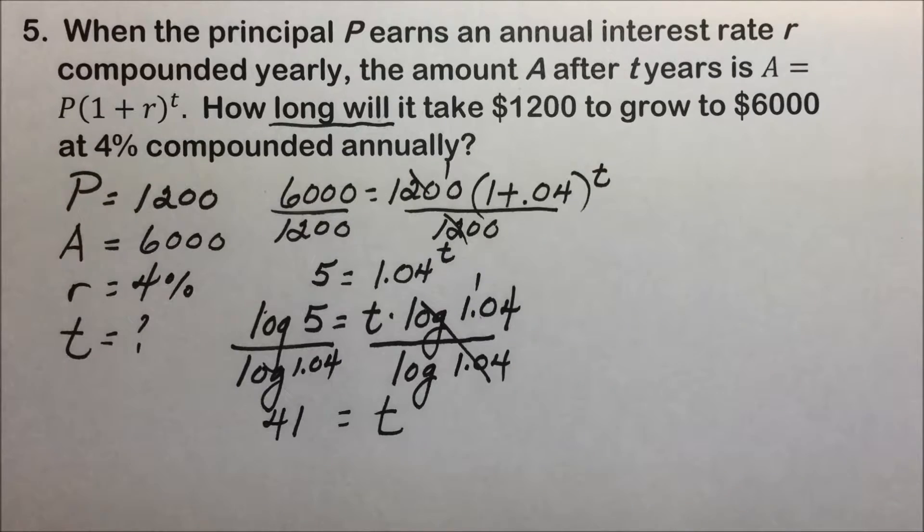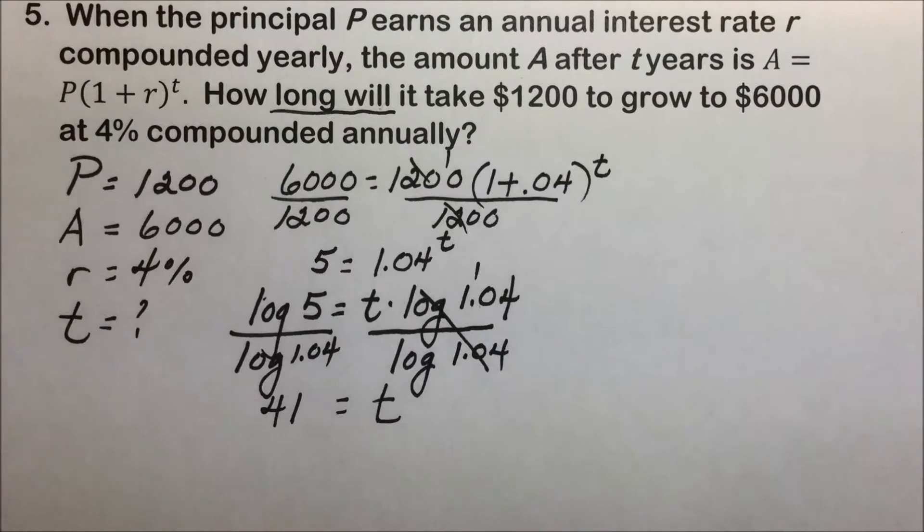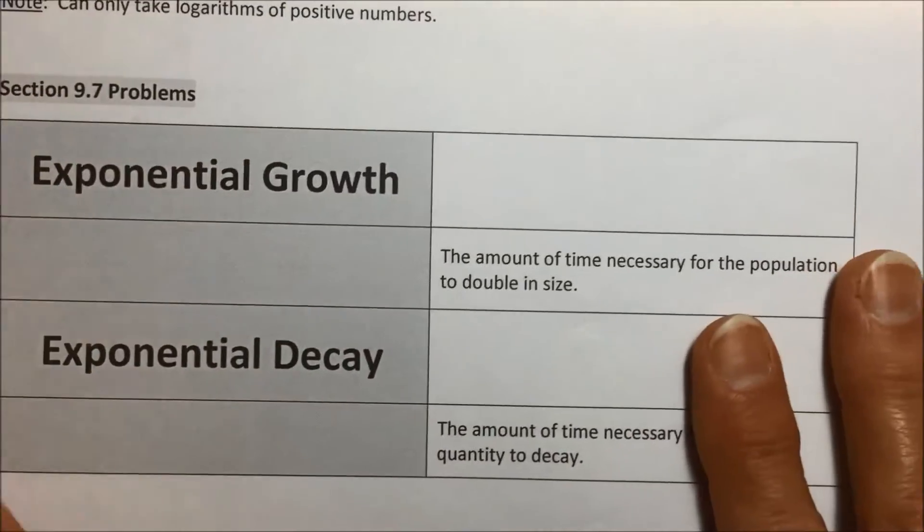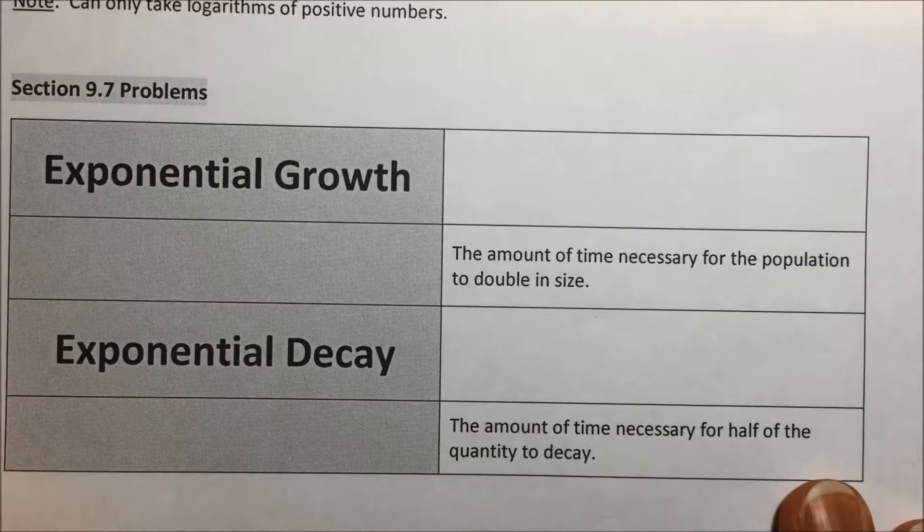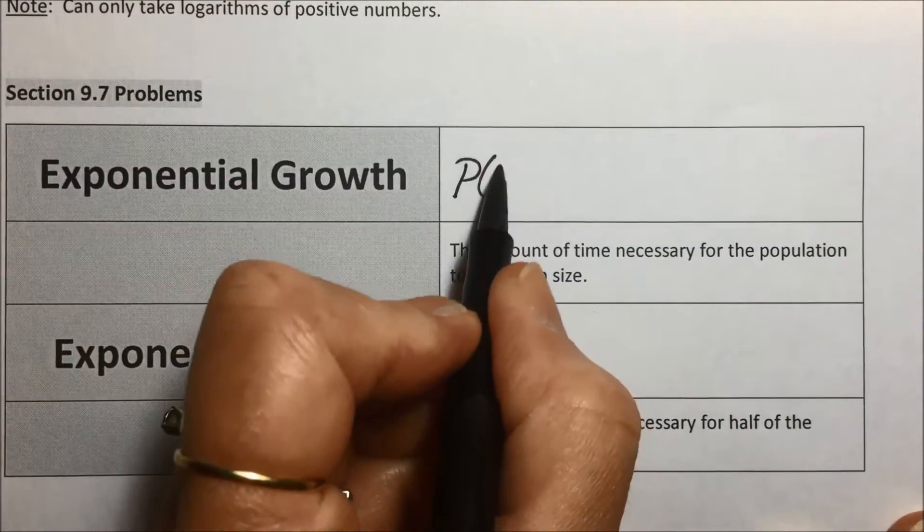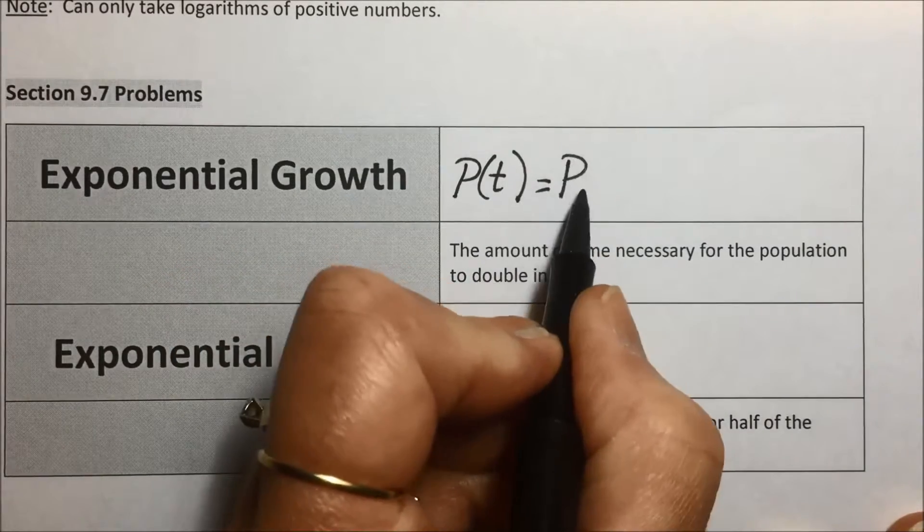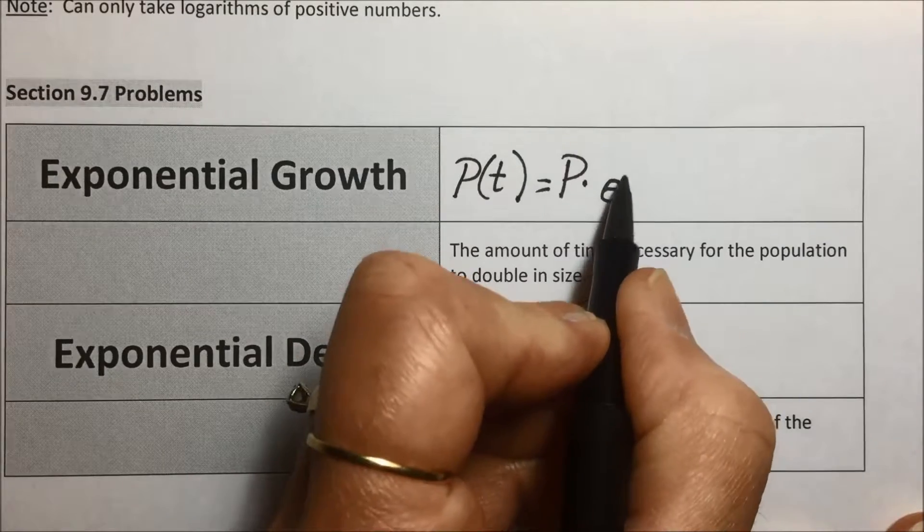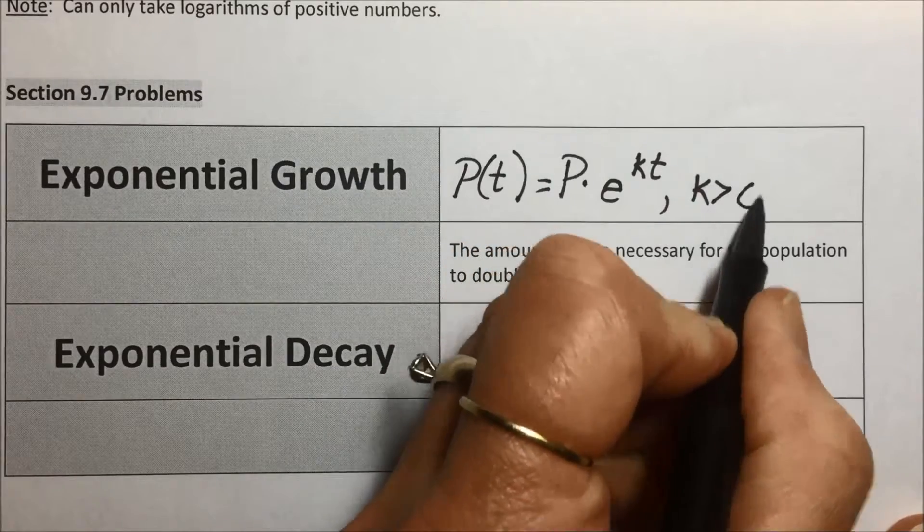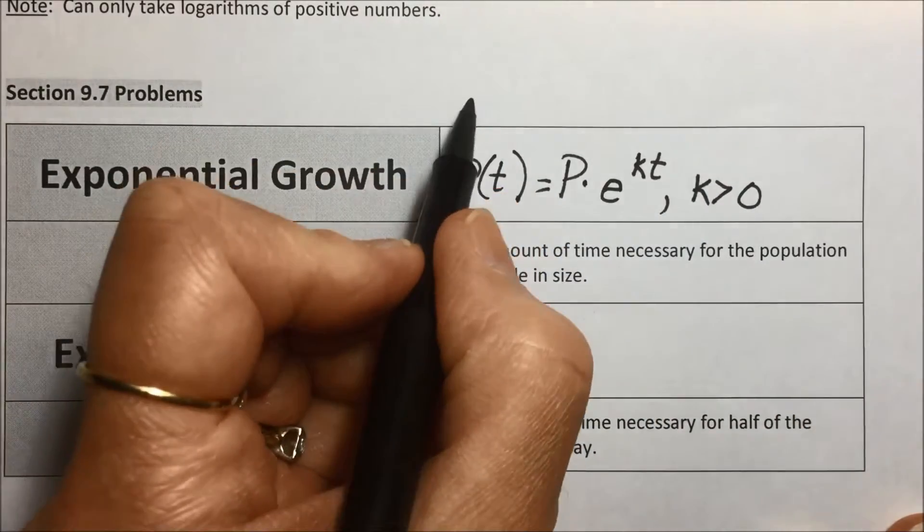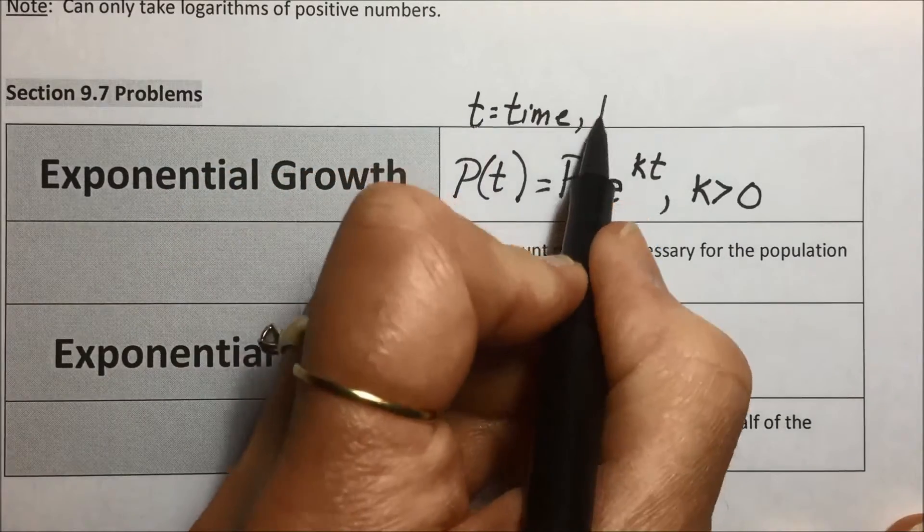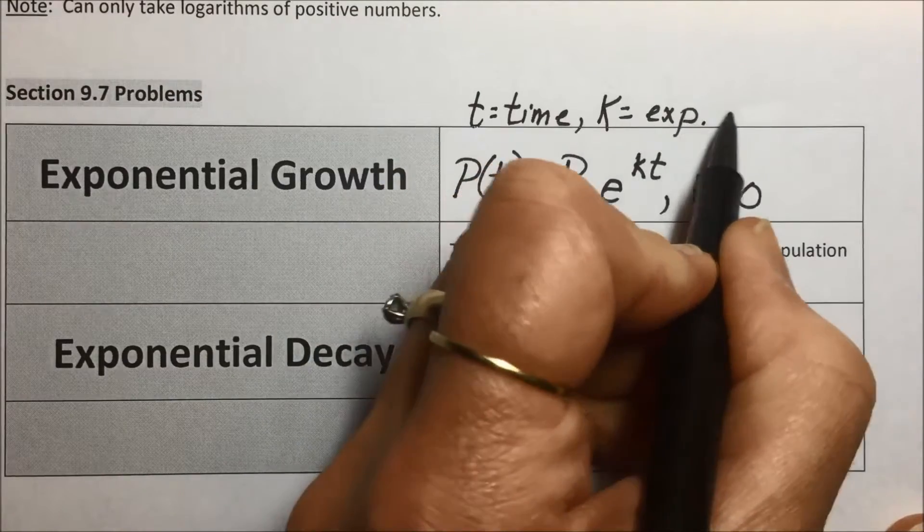We have a lot of times where population will grow exponentially. And because of that common application in many, many areas, we have an exponential growth model that looks like the following. P of t is equal to P times e to the kt power, where k needs to be greater than 0. t is the time, and k is our exponential growth.